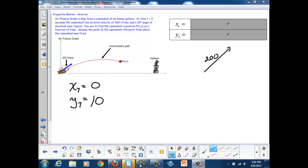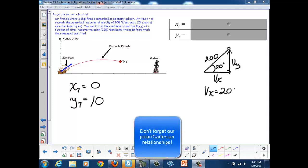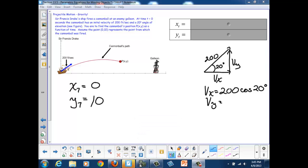So I need to convert that information, 200 feet per second at 20 degrees, into vertical and horizontal velocities. I'll call them vx and vy. Using our right triangle information and our conversion formulas, we can see that vx is going to be 200 cosine 20 degrees, and vy is going to be 200 sine 20 degrees.